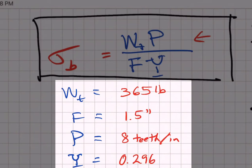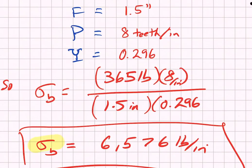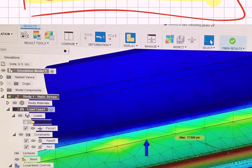But we do need the face width of 1.5 inches and we do need the Lewis form factor which we look up in a table of 0.296. When we plug all of those things into the Lewis bending stress equation we get on the order of 6576 pounds per square inch.